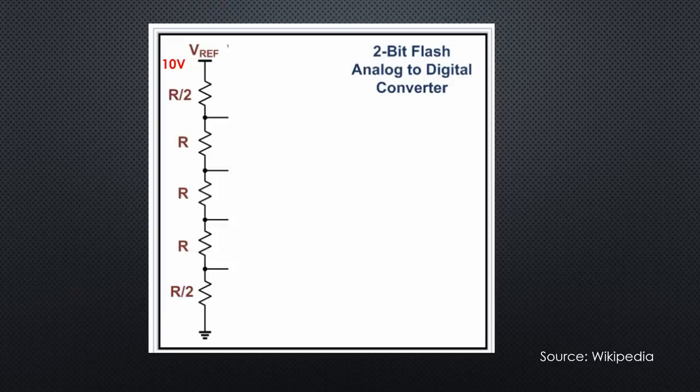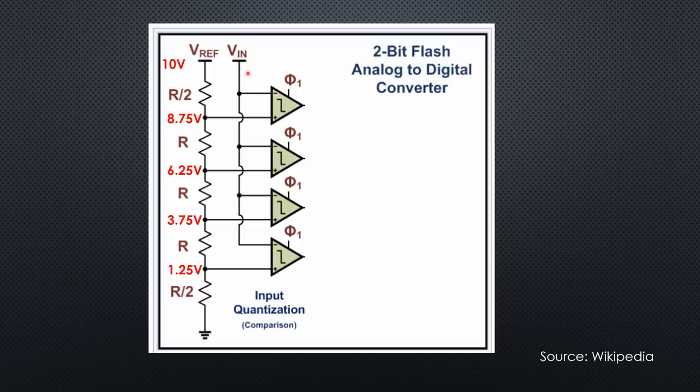Then, we divide the 10 volts into 4 steps of 2.5 volts. We can do this with a simple voltage divider, where we cut one resistor in two. Like that, we get voltages of 1.25, 3.75, 6.25, and 8.75 volts. We now connect one input of a comparator to each of these voltages and connect the second input to the input voltage. It is quite apparent what happens now. A voltage of 2 volts, for example, is bigger than 1.25 volts. So, the first comparator triggers. And all others not.